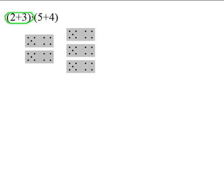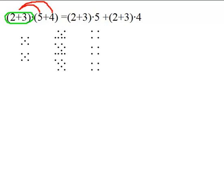Now if I distribute by grouping the 2 plus 3 it might look like this. First I distribute the 2 plus 3 to the 5 to get 2 plus 3 times 5 and then I distribute the 2 plus 3 to the 4 to get 2 plus 3 times 4. This procedure, if represented in dots, amounts to separating all the 5's from all the 4's.